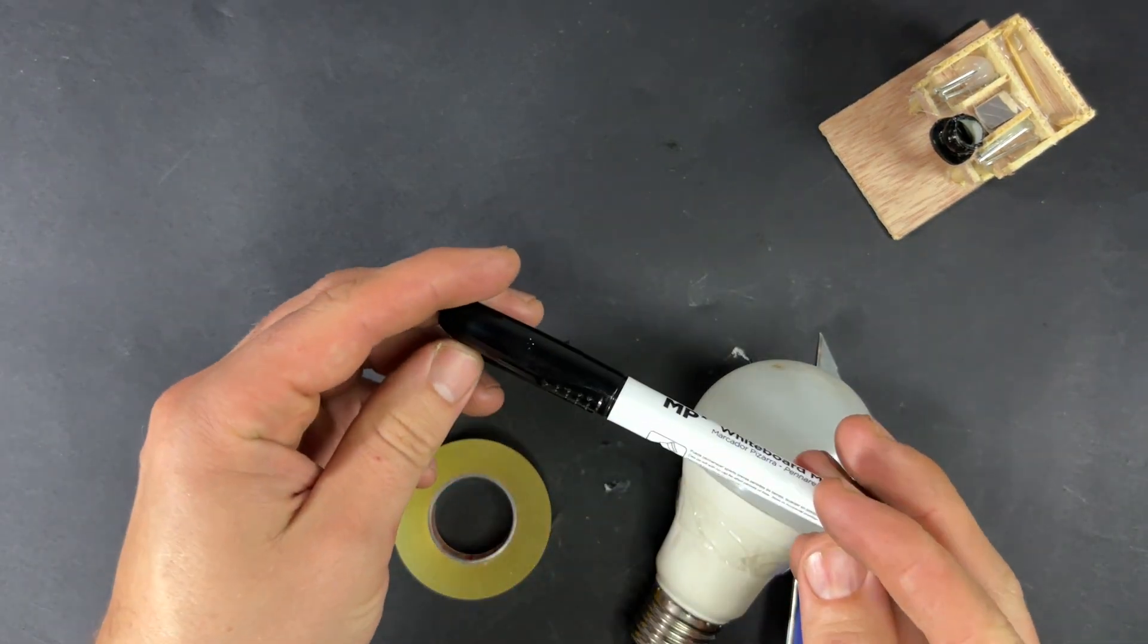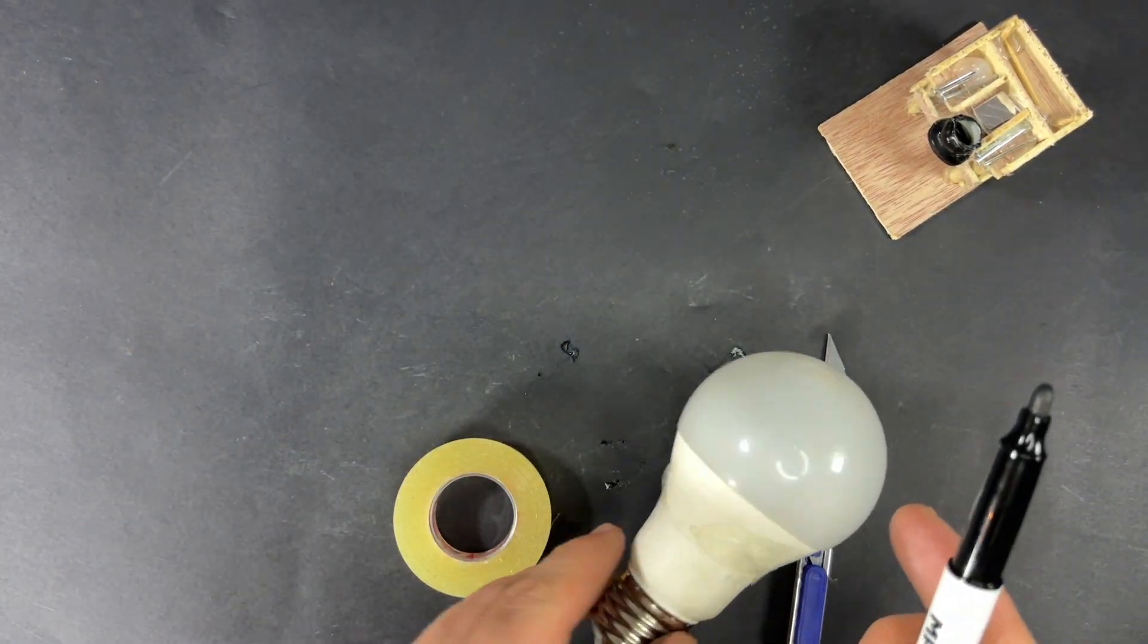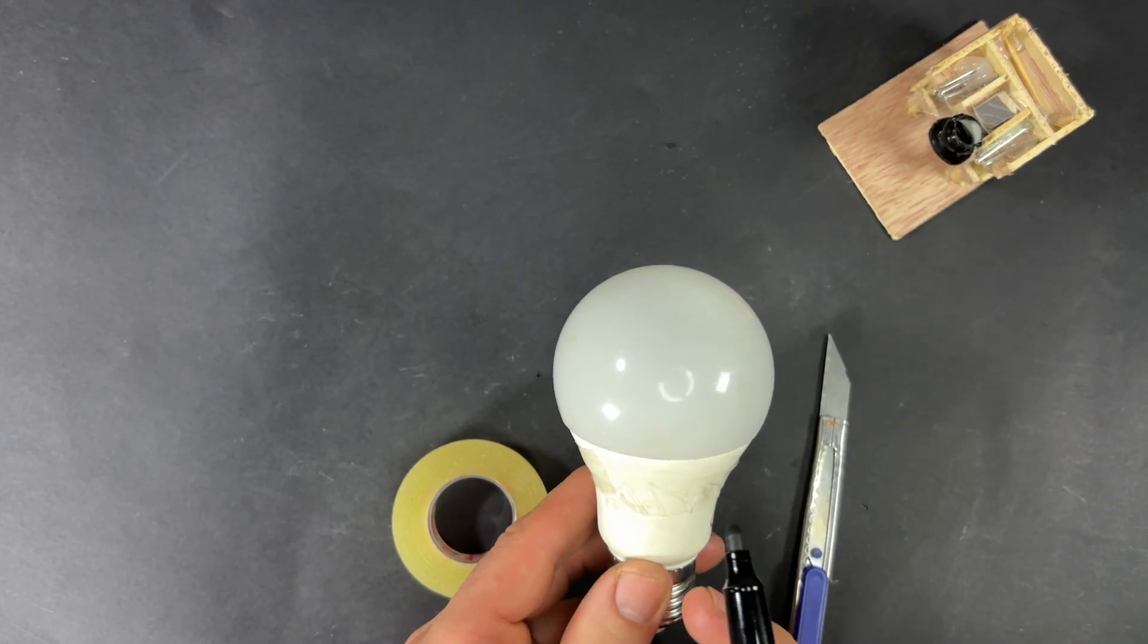Then grab your marker and draw small crosses at opposite sides of the bulb on the tape. These marks are where we'll create tiny ventilation holes.